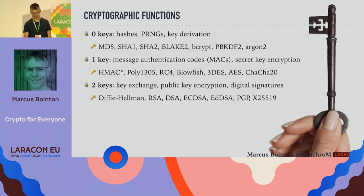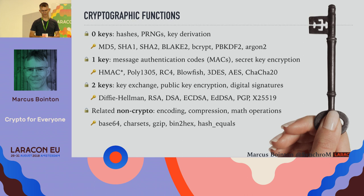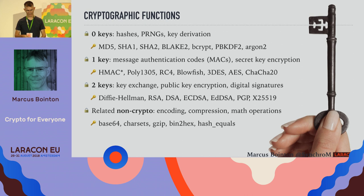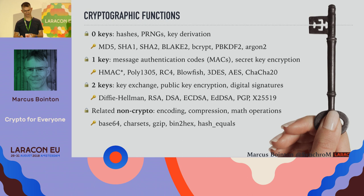We also have non-cryptographic functions related to cryptographic ones: encoding, compression, mathematical operations — things like base64 encoding, gzip, and in particular hash_equals. The mathematics underneath these is really quite difficult, and that often leads people to try and write their own cryptography — which is generally a really, really bad idea. You should avoid that at all costs. Cryptographers know what they're doing, and you want stuff that's been battle-tested.